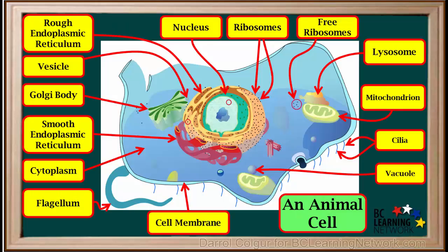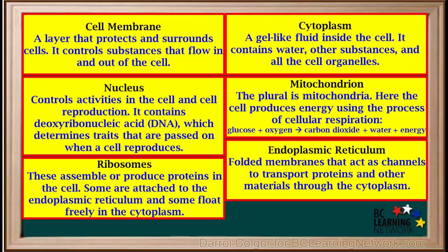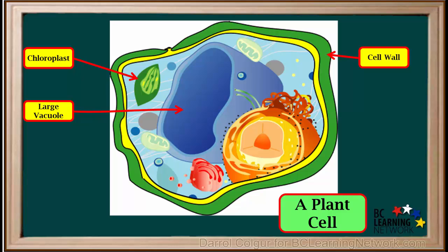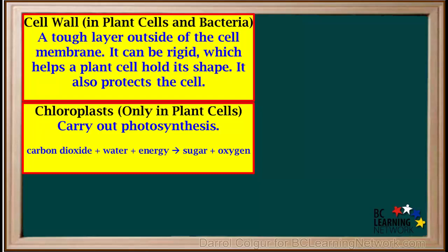In summary, this diagram shows important organelles found in animal cells. With the exception of cilia and flagella, these organelles are also found in plant cells. You may want to pause the video, take a screenshot, and print a copy of this diagram to study from. Here are summary pages of these organelles — you may also want to pause and make a copy. A diagram shows that in addition to other organelles, plant cells have a cell wall and chloroplasts, and plant cells have larger vacuoles than animal cells.